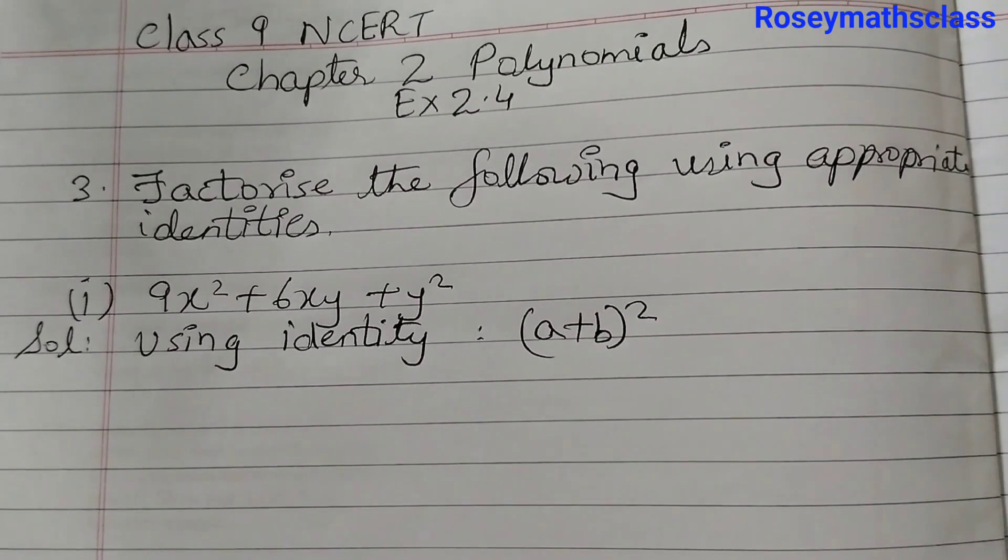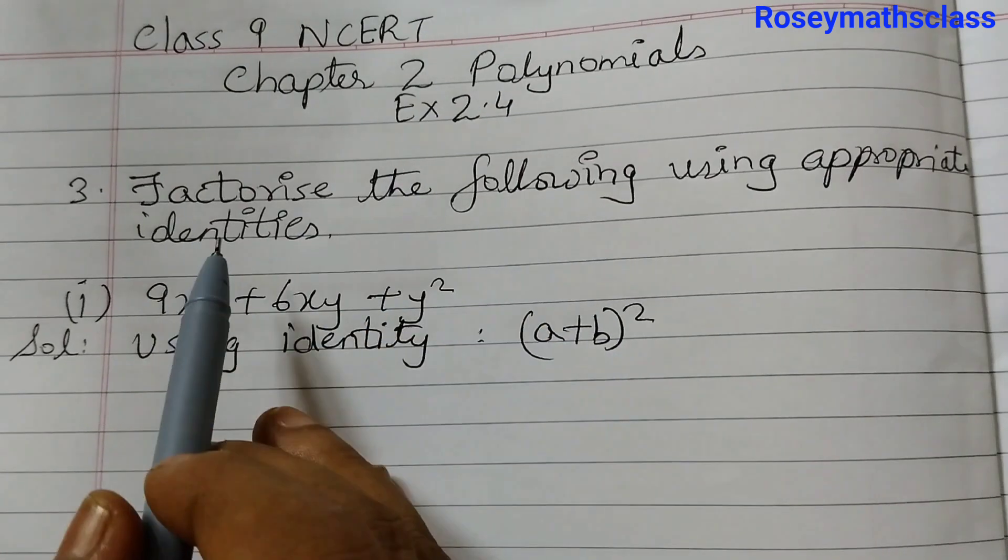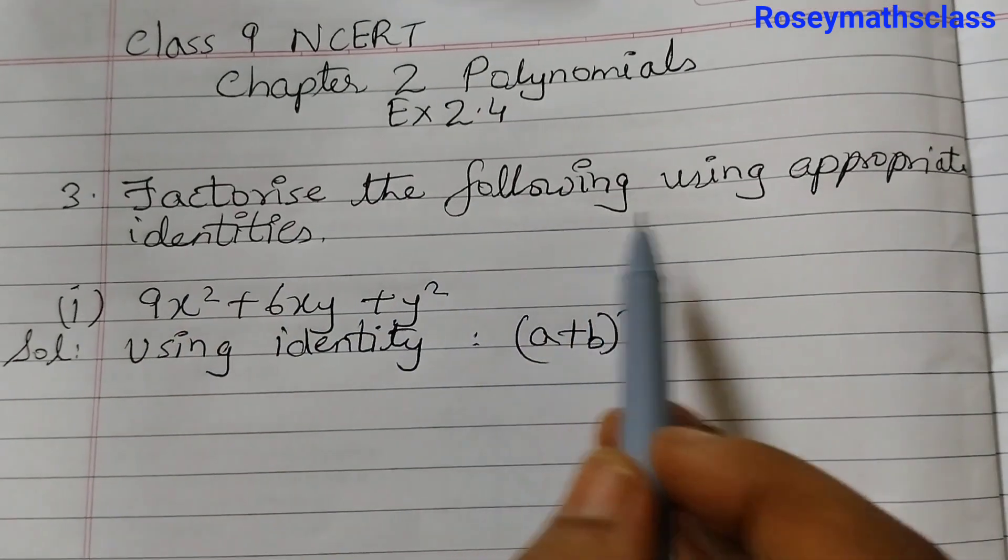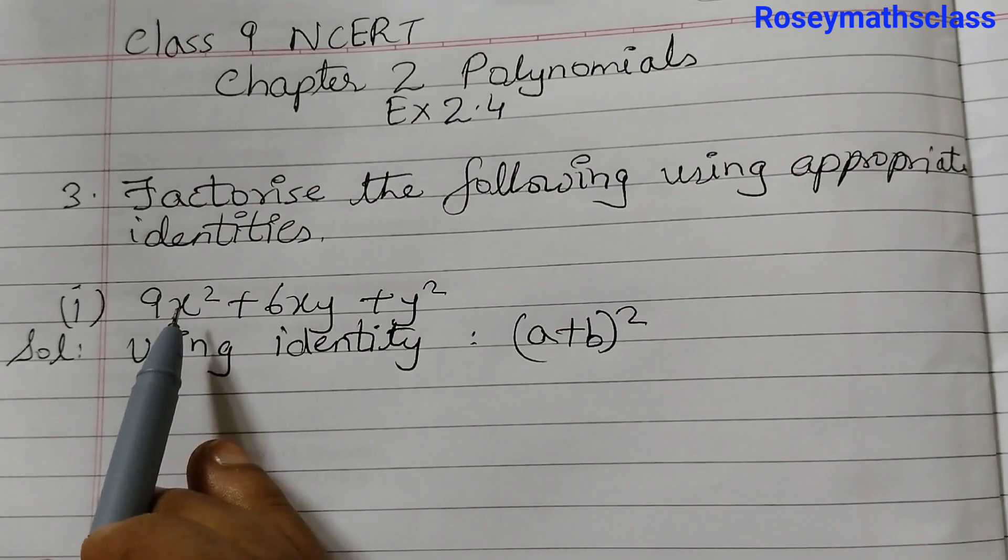Hello students, in this video we shall discuss question number 3 of exercise 2.4. Factorize the following using appropriate identities. There are in total 3 problems here.